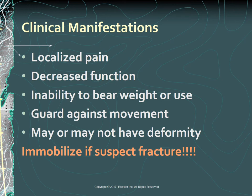The clinical manifestations of a fracture include immediate localized pain, decreased function, and the inability to bear weight on or use the affected part. The patient guards and protects the extremity against movement. Obvious bone deformity may not be present. If a fracture is suspected, the extremity is immobilized in the position in which it is found. Unnecessary movement increases soft tissue damage and may convert a closed fracture to an open fracture or create further injury to adjacent nerves and blood vessels.